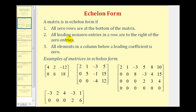Second, all leading non-zero entries in a row are to the right of the zero entries. Notice in all of these rows, if there are zeros, the non-zero entries are always to the right of the zeros. The six is to the right of this zero, the five is to the right of this zero, the negative four is to the right of these two zeros, and so on.